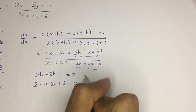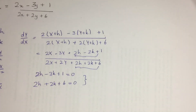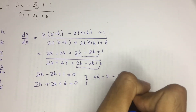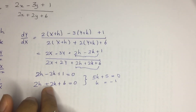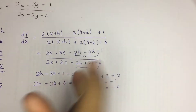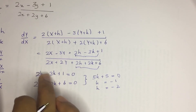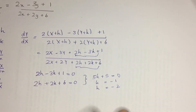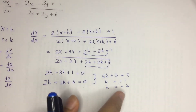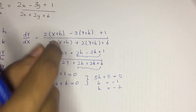Subtracting the two equations gives 5k plus 5 equals 0, so k equals minus 1. Substituting back gives h equals minus 2. To double-check: substituting h equals minus 2 and k equals minus 1 into both equations confirms the values are correct. So k equals minus 1 and h equals minus 2. Using these values, the constant terms become zero and the equation becomes homogeneous type.